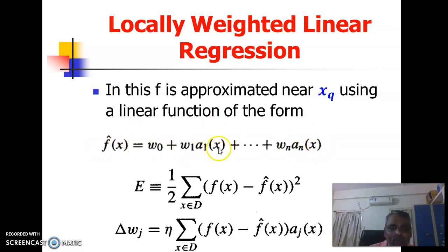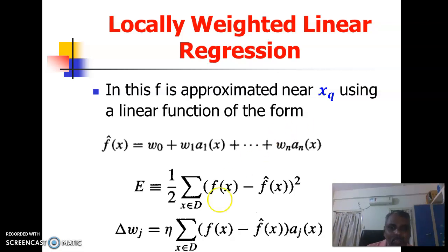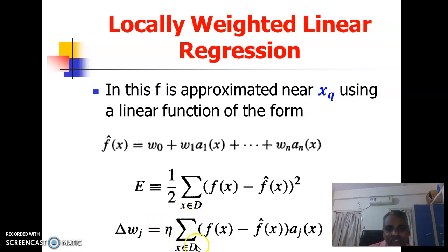The w values can be found using an iterative process: w_new = w_old + delta_w. The delta_wj can be found using this expression — these expressions are related to the gradient descent algorithm. Delta_wj equals eta (the learning rate) times the sum over x in D of [f(x) minus f-cap(x)] times a_j(x). Using this, we can find the w values iteratively.